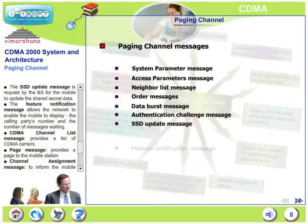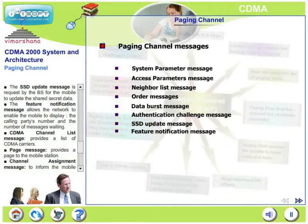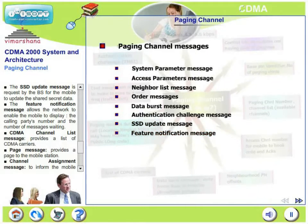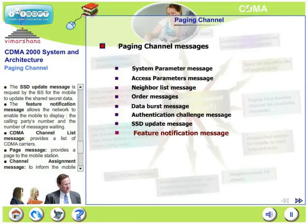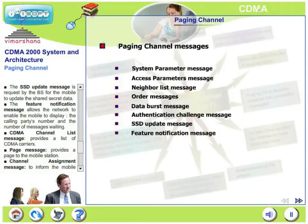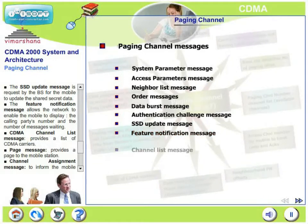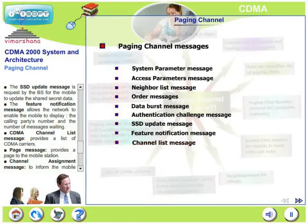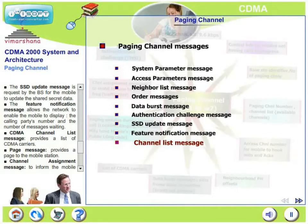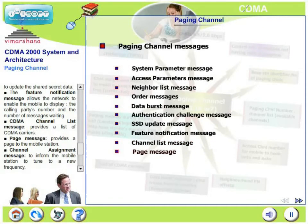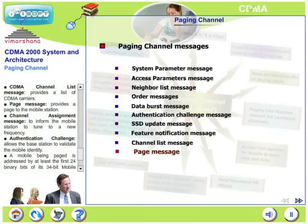The feature notification message allows the network to enable the mobile to display the calling party's number and the number of messages waiting. The CDMA channel list message provides a list of available CDMA carriers. The page message provides a page to the mobile station.